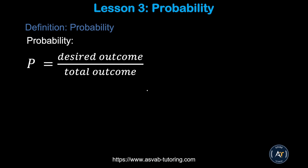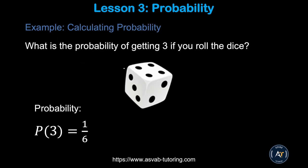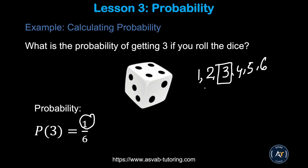The next thing we'll learn is probability, which is also a very common topic in the officer candidate test. You might see a couple of problems based on it. Probability is defined as desired outcome over total outcome. Let's apply this to a problem: if you roll a die, it has six sides — 1, 2, 3, 4, 5, 6. What is the probability of getting a 3? There is only one 3, and there are 6 total outcomes. So the probability of getting a 3 is 1 out of 6.